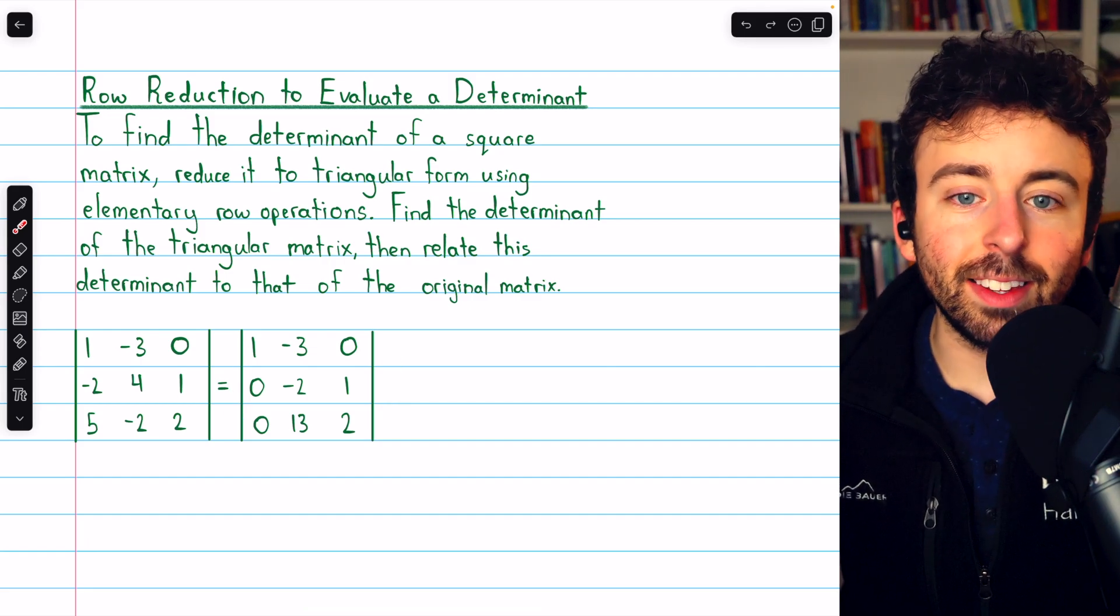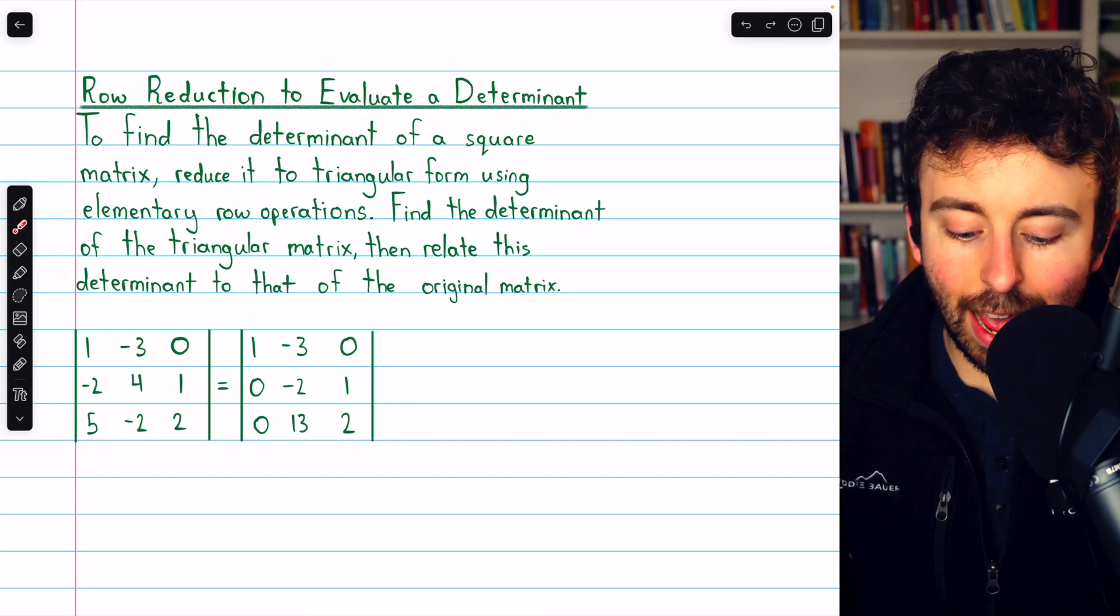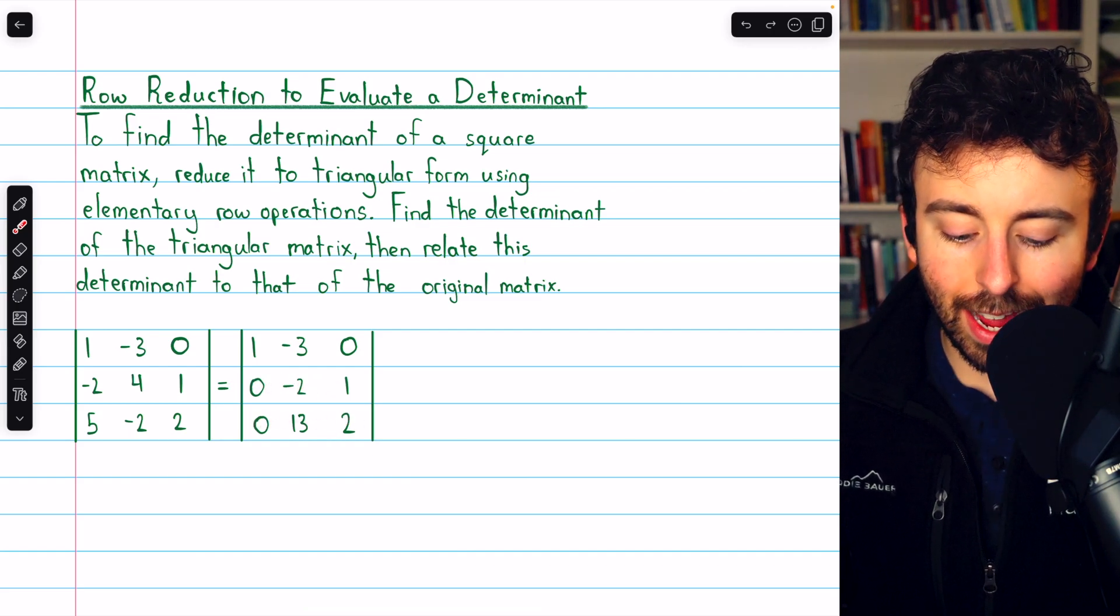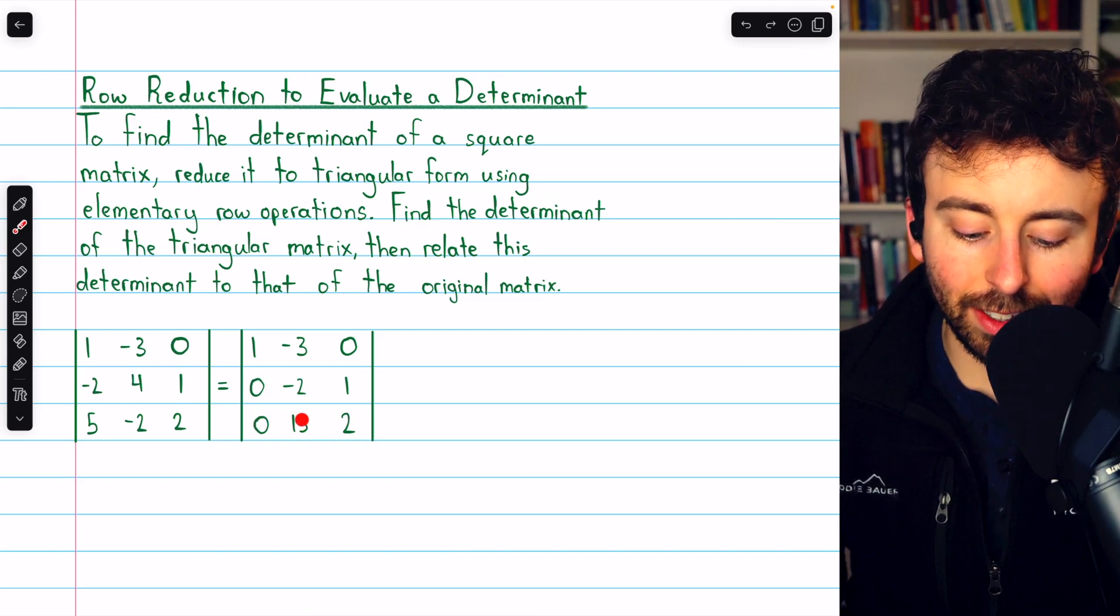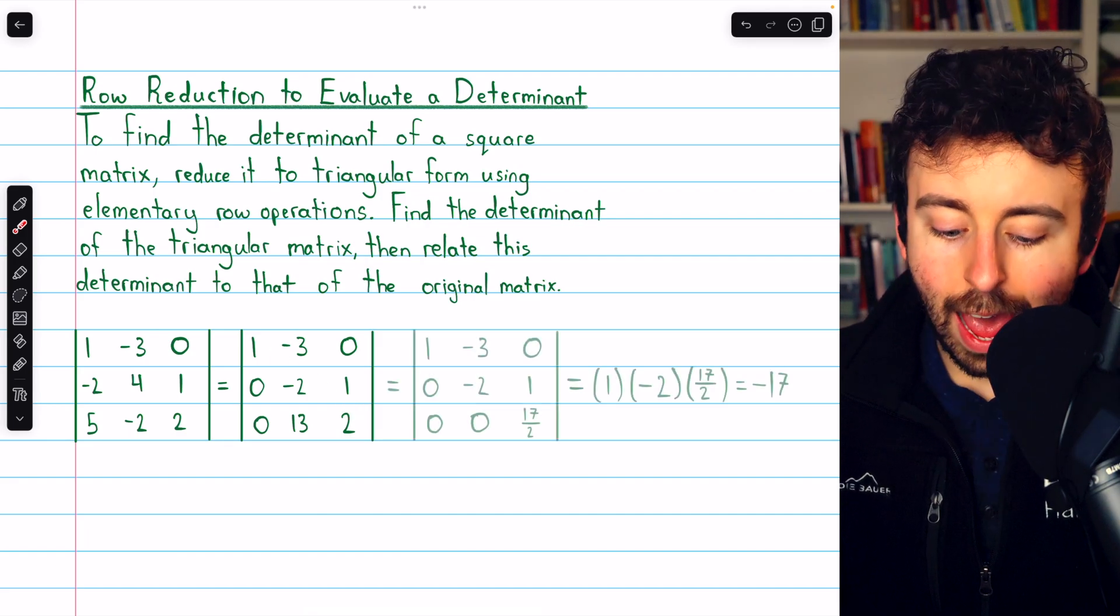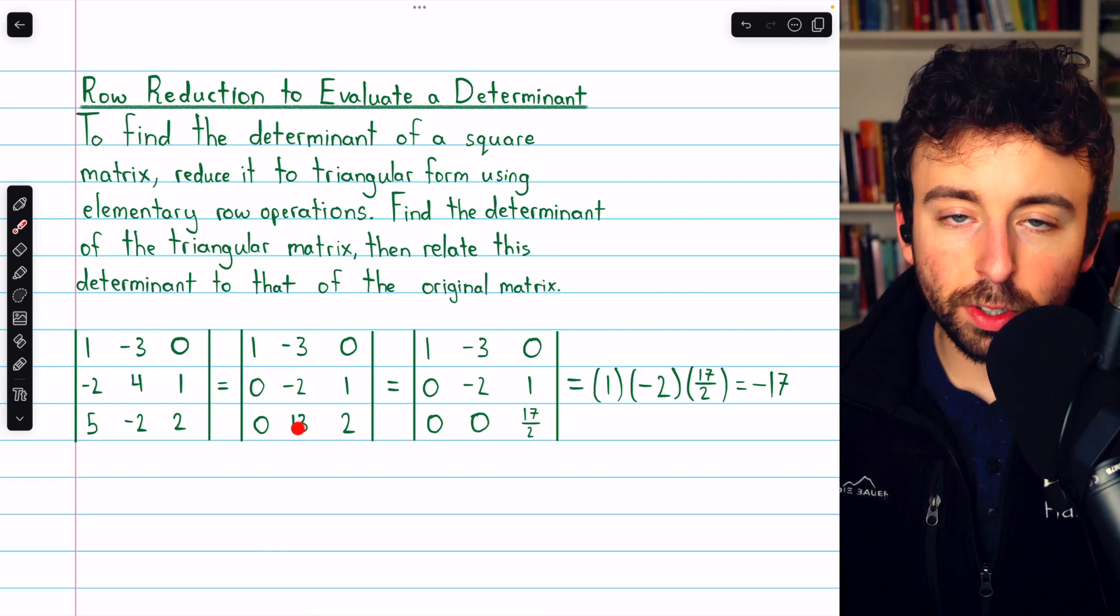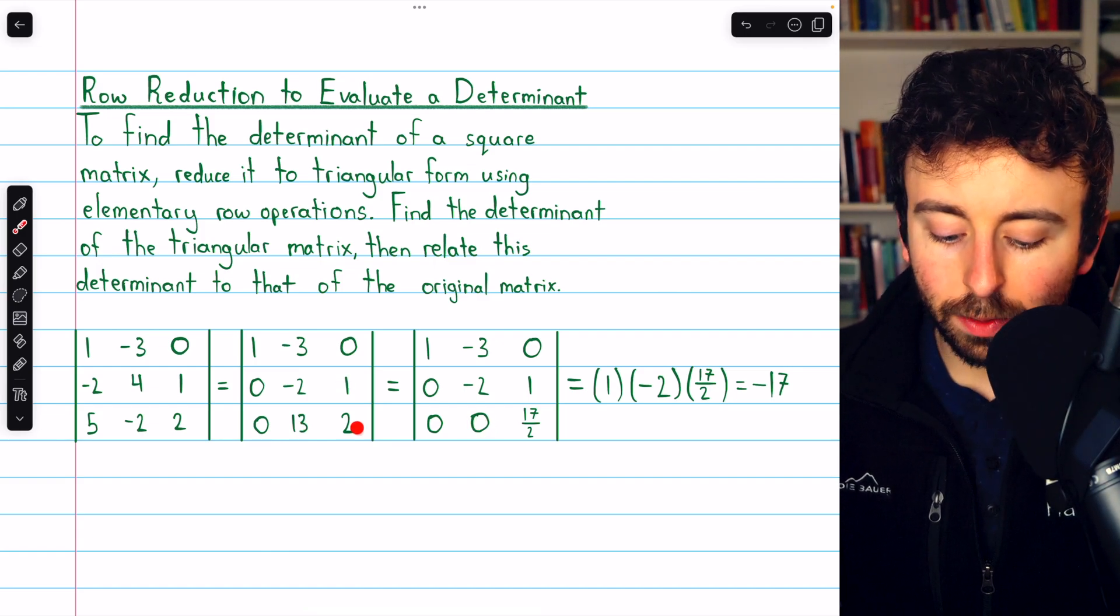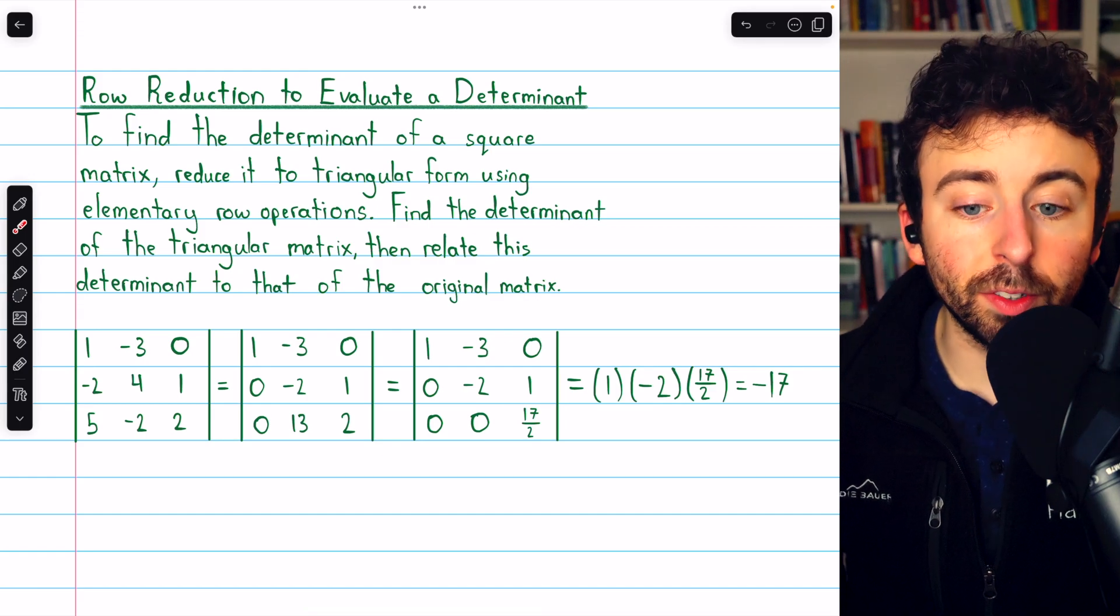One more step to get this in triangular form, we will add thirteen-halves times row two to row three in order to get a zero below this diagonal entry, and then this will be in upper triangular form. Adding thirteen-halves times row two to row three eliminates the thirteen, and then thirteen-halves plus two is thirteen-halves plus four-halves, so seventeen-halves.